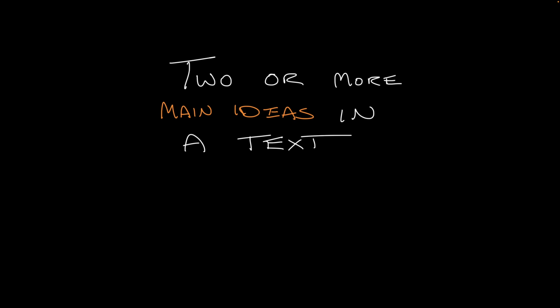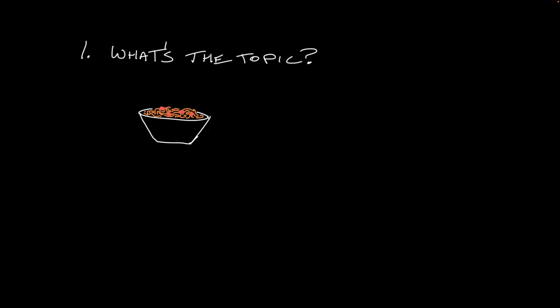To identify the main idea or ideas in a text, ask yourself two questions. First, what's the topic of this text? You can usually describe the topic with a single word or phrase, like pasta or bears or knife juggling.